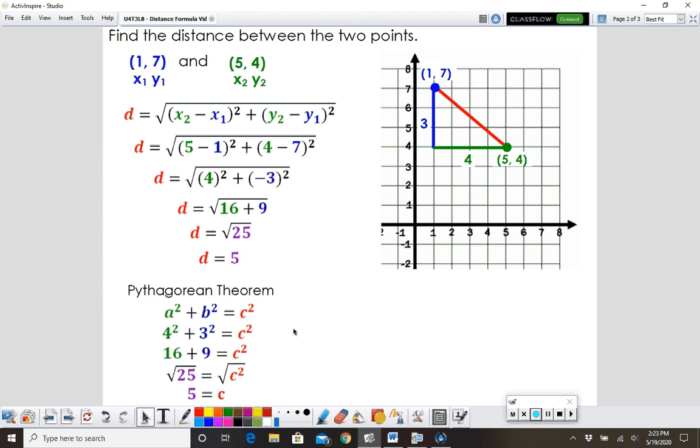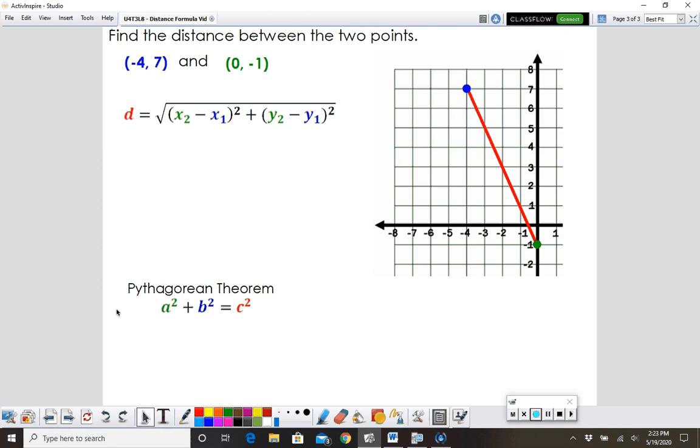So the problems, once you understand the formula, are pretty straightforward. This one has two little glitches in it, so we're just going to show you again. We're going to start with these two points on our grid. We've got our negative 4, 7 up here, and we've got 0, negative 1 down here.